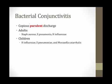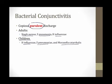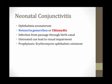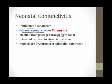Bacterial conjunctivitis presents with copious purulent discharge — the word purulent distinguishes it from the watery discharge of viral conjunctivitis. In adults, Staph aureus is the most common cause, followed by Strep pneumo and H. flu. In children, H. flu is the most common, followed by Strep pneumo and Moraxella catarrhalis. A special form called neonatal conjunctivitis or ophthalmia neonatorum can occur in newborns due to Neisseria gonorrhea or Chlamydia, acquired from passage through the birth canal. If untreated, this can cause permanent visual impairment, so all newborns have erythromycin ointment applied to their eyes at birth.